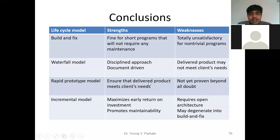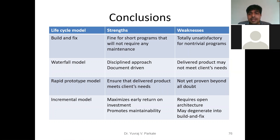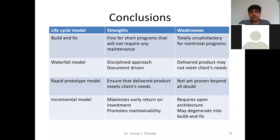The third model is the Rapid Prototype model. It ensures that the delivered product meets the client's needs, because we give the product to the customer in the initial phase itself. The disadvantage is that it is not yet proven beyond all doubts — this type of model is not 100% proven to satisfy all the needs of clients.